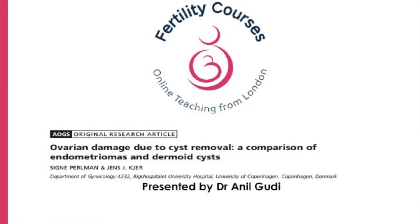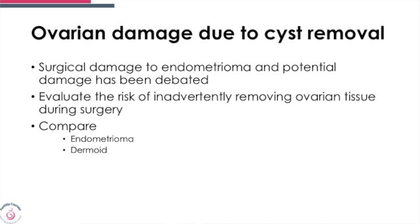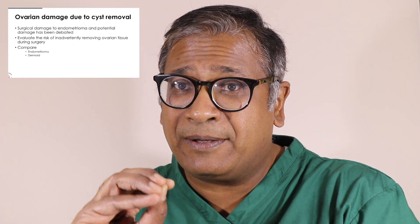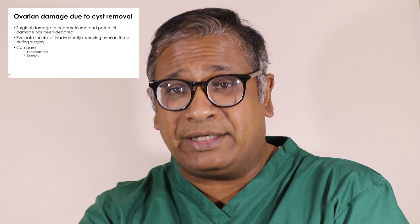Two of the commonest benign tumors that we see in reproductive surgery are endometriomas and dermoids. The paper which came out evaluated which surgery would cause more damage to the normal ovarian tissue. We have often debated, and surgeons will often say: I can operate very well, I do not destroy normal ovarian tissue, I can dissect extremely well. That is surgical expertise talking. Evidence does not suggest that surgeons can do everything without removing a small part of the ovary, and this study demonstrates that.